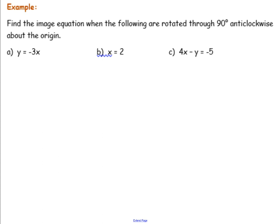So the first one is y equals negative 3x. Let's draw an axis — draw the x and y axis. And then label a few things. If it helps, you'd like me to label them all — you could just call that one 3.